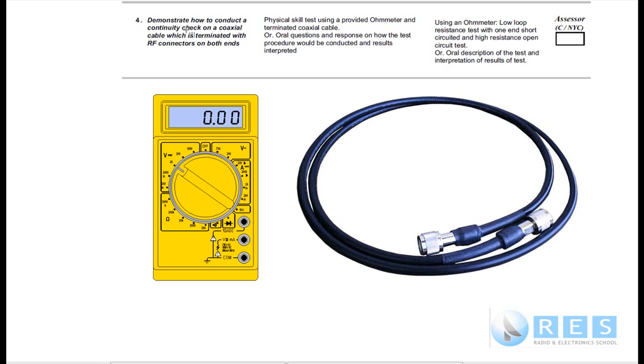Competency number 4: demonstrate how to conduct a continuity check on coaxial cable which is terminated with RF connectors on both ends. What we've got is a radio frequency cable with two plugs on each end.